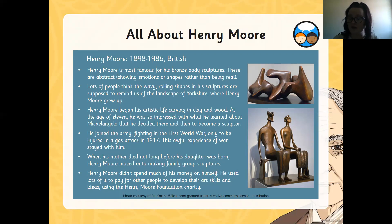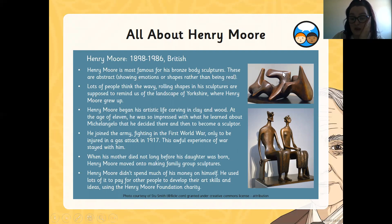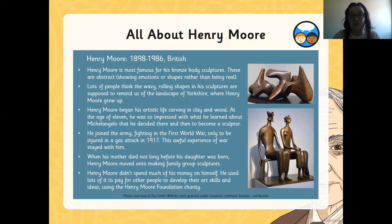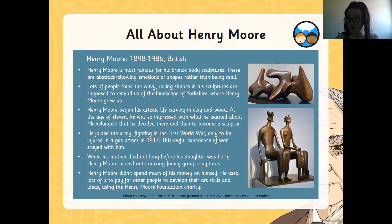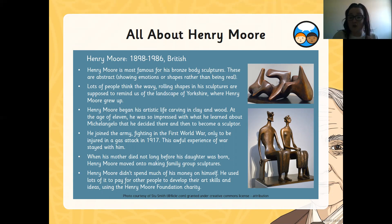When his mother passed away, not long before his daughter was born, Henry Moore moved on to making family group sculptures — more like the one at the bottom, made up of different shapes identifying a man, a lady, or a family. Henry Moore didn't spend much of his money on himself. He used to pay for others to develop their art skills, and he created something called the Henry Moore Foundation charity. Rather than spending all his money on himself, he decided to invest his money in making other people's lives better.